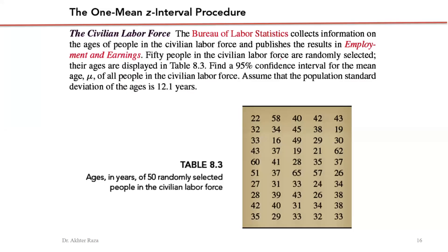One complete example of interval estimation: find the 95% confidence interval for the mean age of all people in the civilian labor force. That is our population, and these are just a sample of 50 randomly selected civilian labor force persons whose ages are given. We are interested to find the confidence interval.